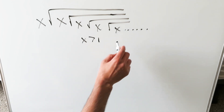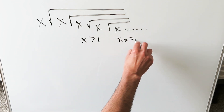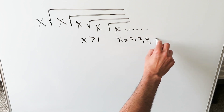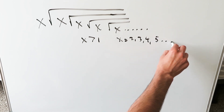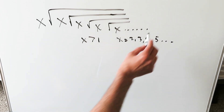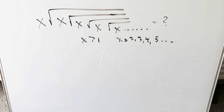What would x represent here? x would be any value larger than 1. We are talking about whole numbers, so x can be equal to 2, 3, 4, 5 — anything. A reasonable number. But what is the end result of all of this? Let's compute it.